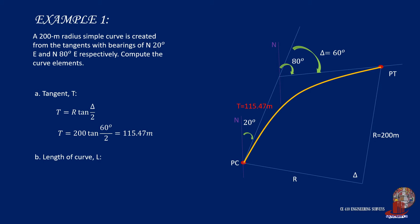Next is the length of curve L. By formula, we know L is taken as 2πr delta over 360 degrees. In this case, we are given degrees as the units so we use the conversion 2πr over 360 degrees. By placing the values, we end up with L equal to 209.44 meters.